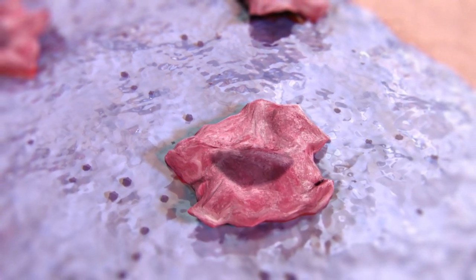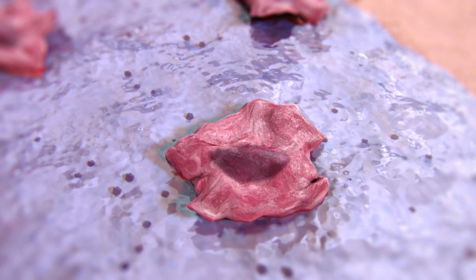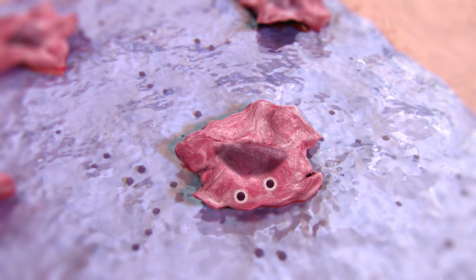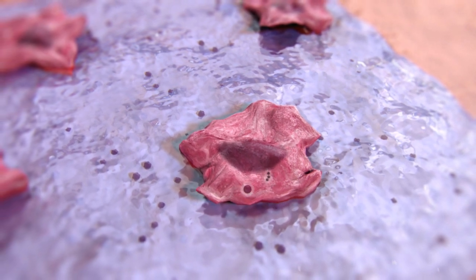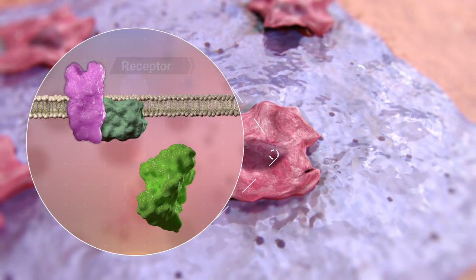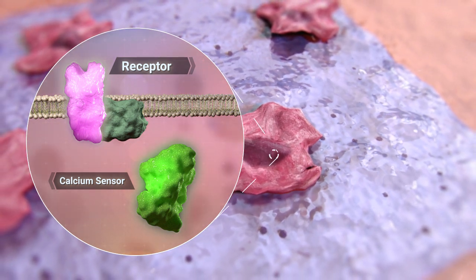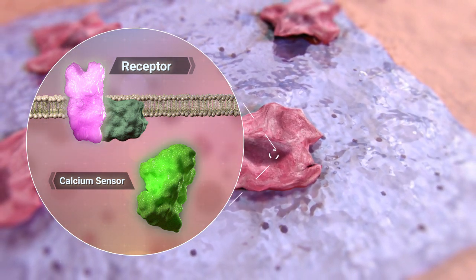The lipid transfection reagent has formed micelles that encapsulate the receptor and calcium sensor DNA. These micelles are internalized and broken down by the cells, thereby releasing the receptor and calcium sensor coding DNA, which is taken up by the nucleus during cell division.